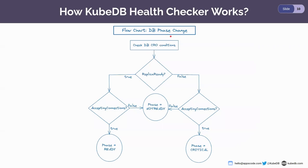KubeDB health check determines the database phase using the health checker. It uses two conditions: replicarity and accepting connections. The operator checks if the replicarity condition is true — if it is, then it checks accepting connections. If accepting connections is also true, then the database phase is set to ready.